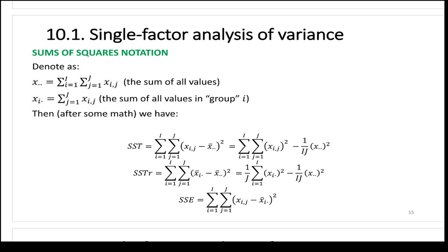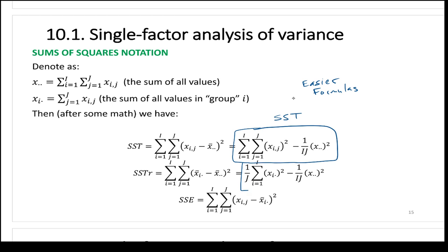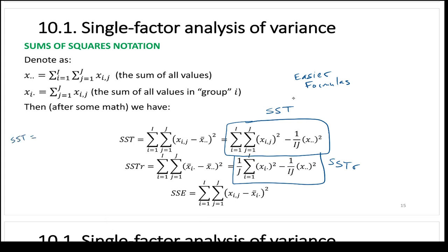There are easier formulas for calculating SST, SSTR, and SSE. You really only need to calculate two of the three because SST equals SSTR plus SSE, so you can always get SSE as SST minus SSTR. Calculate two and get the third from the relationship. The x-double-dot notation means the sum of all values across all groups.